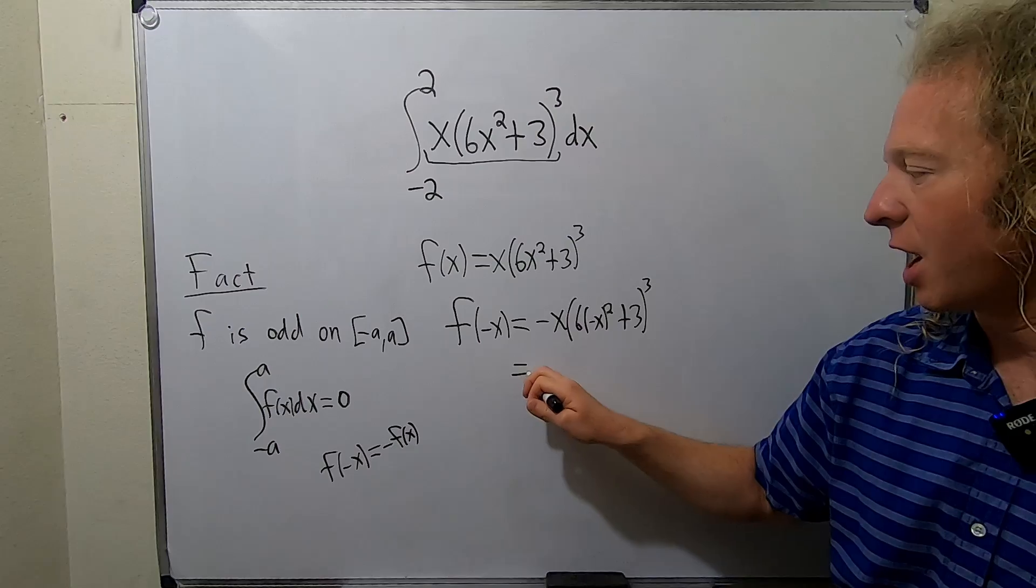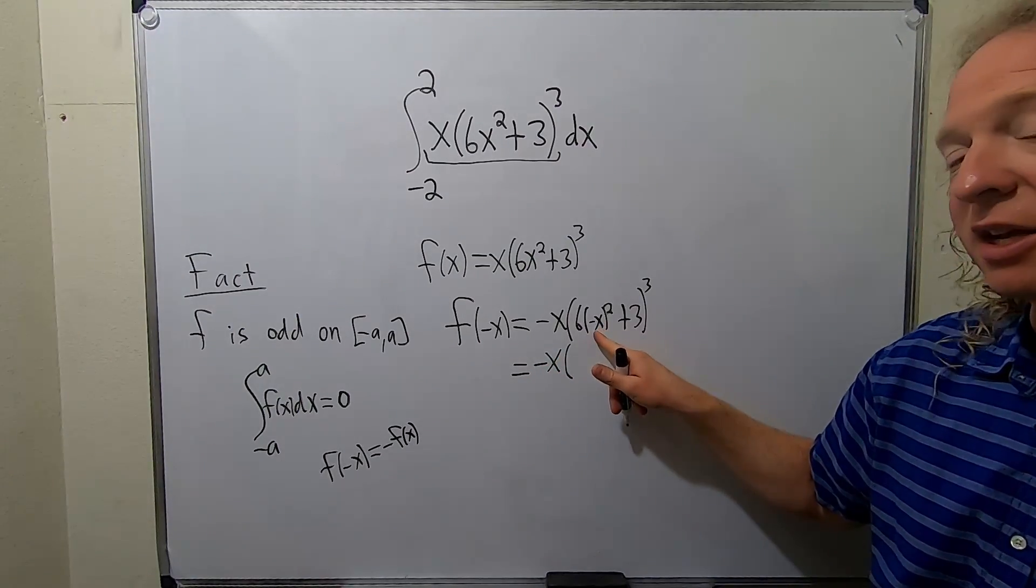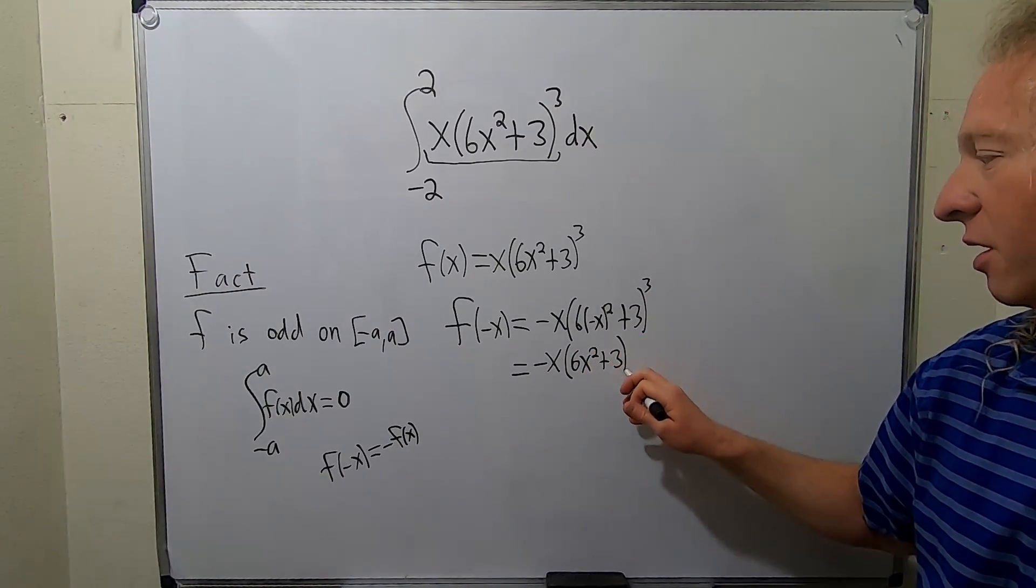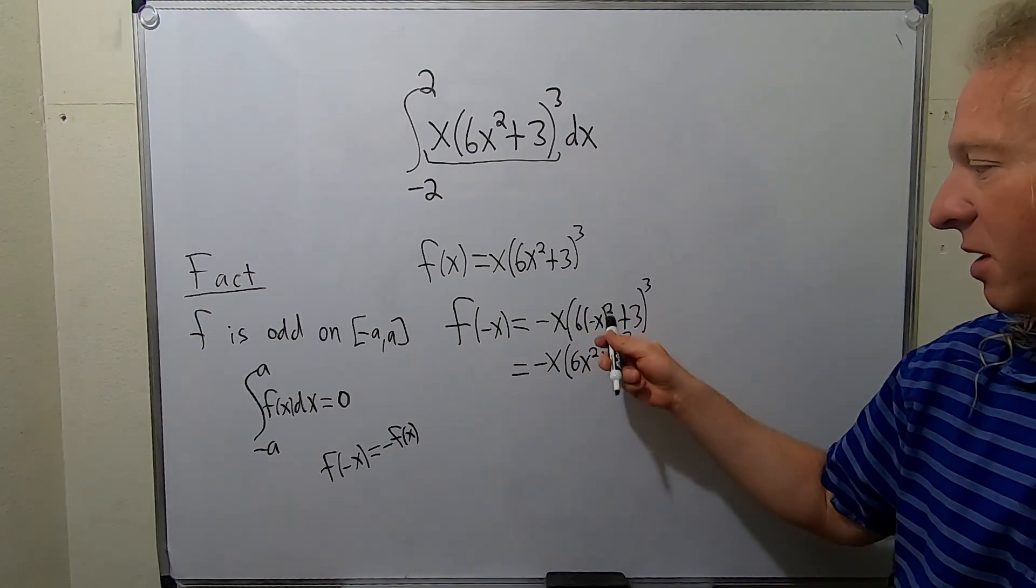And this is where the magic happens. This is still negative x. This negative, it's being squared right, this negative x. So it's going to become x squared plus 3 cubed. So it goes away because of the 2.